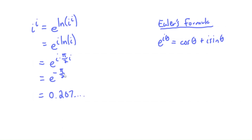Now, e to the negative pi over 2 is what's called the principal value of i to the i. Notice the one big step I left out — the one thing I didn't explain — was why is natural log of i equal to pi over 2 times i?